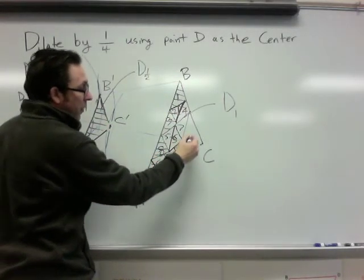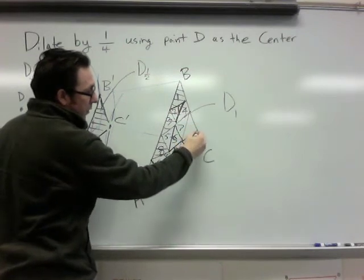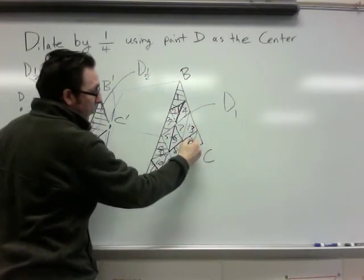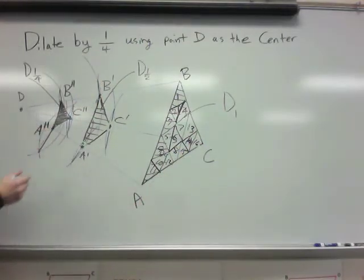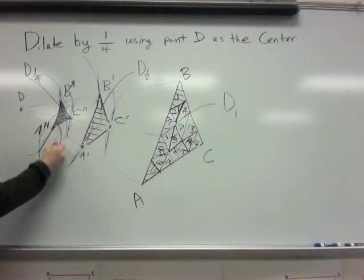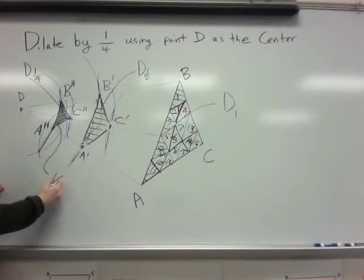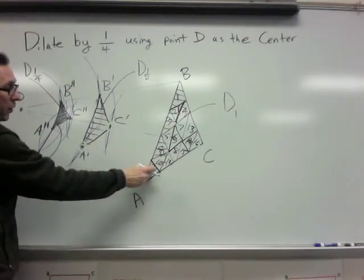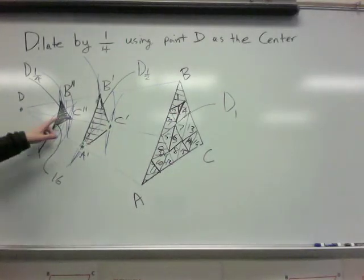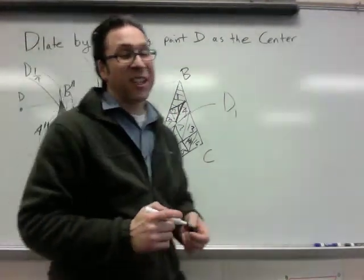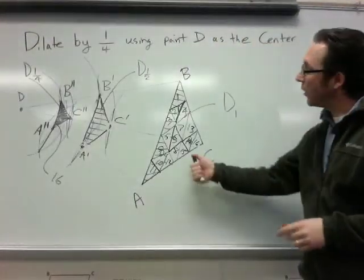So if I dilate by a quarter, it would take 16 of these to go into the pre-image. So the area of the image that's dilated by one quarter is actually 16 times as small as the original.